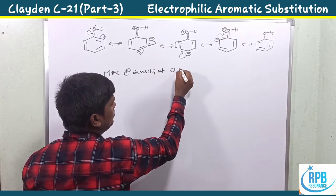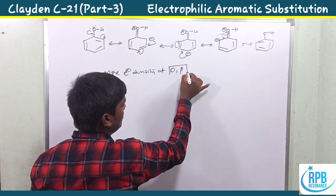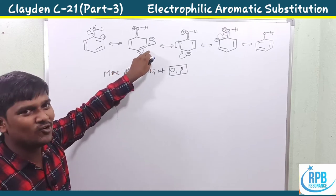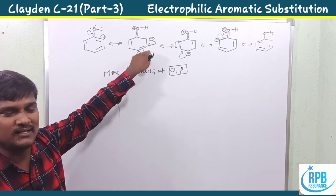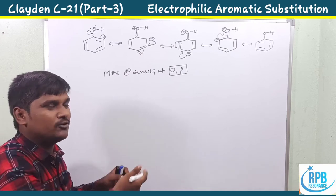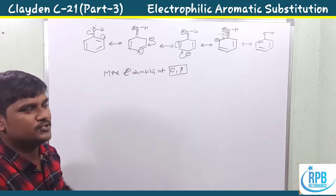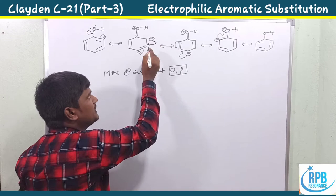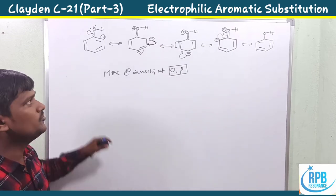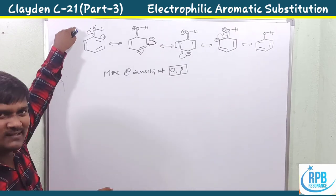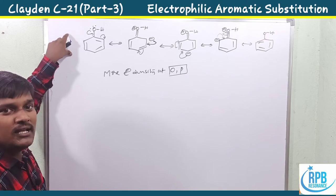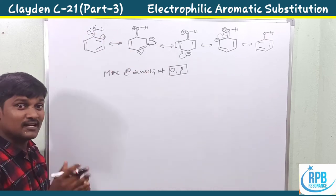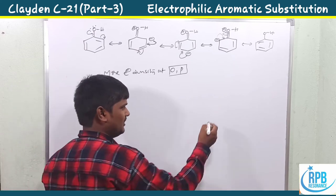These delocalization structures confirm that more electron density is created at the two ortho positions and the para position. The meta position does not have more electron density compared to ortho and para positions. Therefore, meta substitution products cannot be produced by the OH group. This was originally confirmed by NMR spectroscopy.